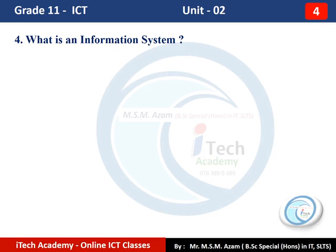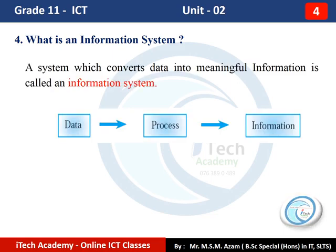Question Number 4: What is an information system? A system which converts data into meaningful information is called an information system. A system has three elements: input, process, and output. In an information system, the input is data, the process remains the same, and the output is information.